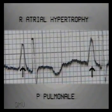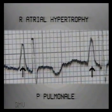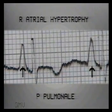This is a very prominent P pulmonale — 5 small squares tall — suggesting right atrial hypertrophy.